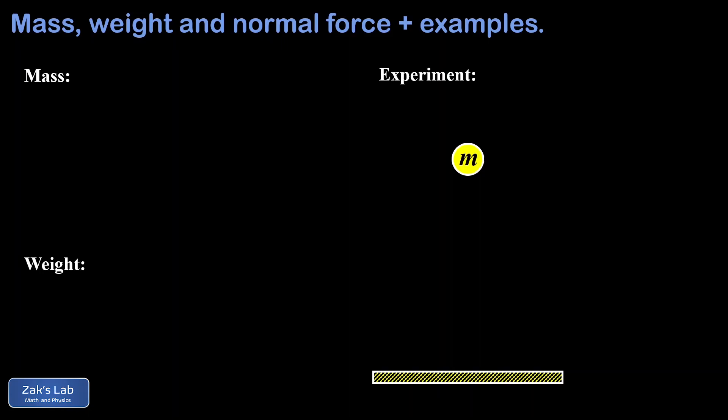In this video, we're going to discuss the difference between mass and weight. Then we're going to derive the simple formula weight equals mg — that's mass times the acceleration of gravity — for computing the weight of a mass m. Next, we define the normal force acting on a mass and learn how to calculate it. And finally, we're going to work several examples to illustrate how to apply these new ideas.